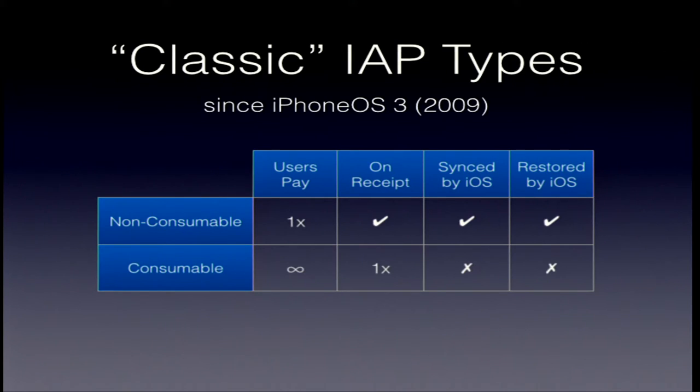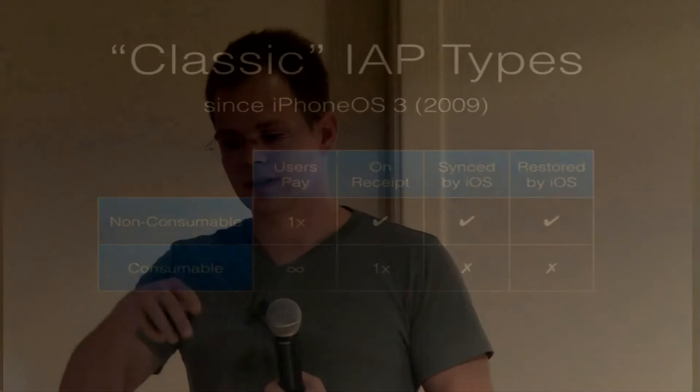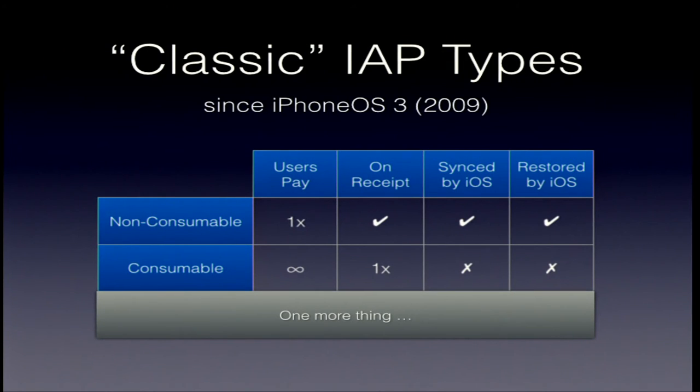The classic in-app purchase types have been in existence since iPhone OS 3. They were non-consumable and consumable items. For non-consumable items, the user pays once and keeps it — it's on the receipt forever and synced and restored by iOS. For consumable items, the user can buy as often as they like. It's on the receipt only once, and it never gets synced or restored by iOS.